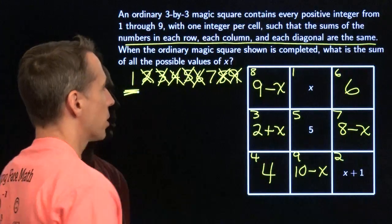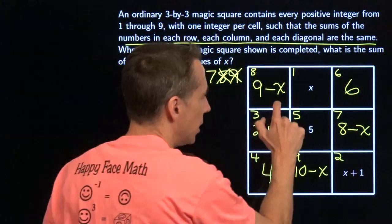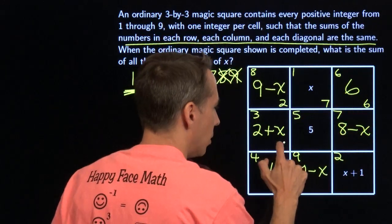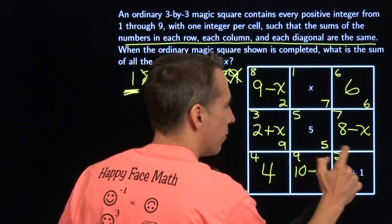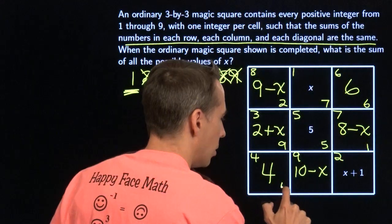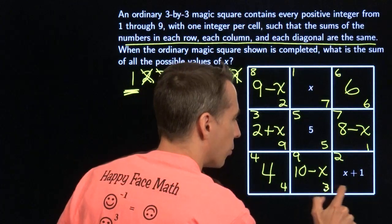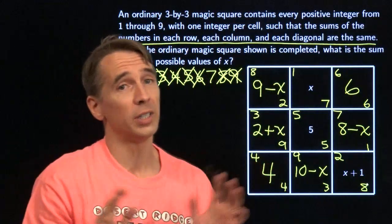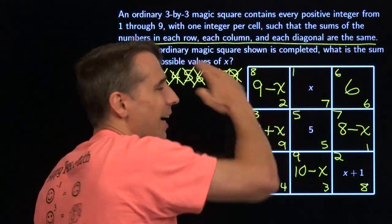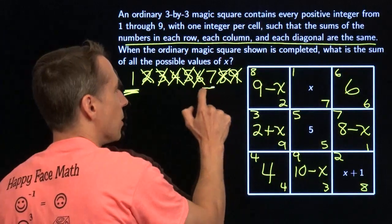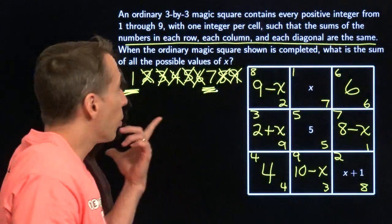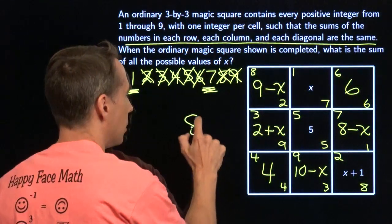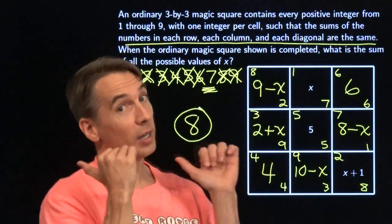Let's check 7. We know 1 works. We check 7, put 7 in here, we'll get 2, 7 there, 6 over here, 9, 5, then 1, 4, 3, then 8. And once again, we've used each number from 1 to 9. Rows are fine, columns are fine, diagonals are fine, 7 is okay as well. And we're looking for the sum of all possible values of x. 1 plus 7 is 8. And we're ready for the next problem.